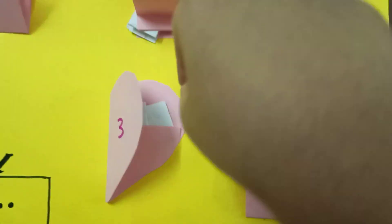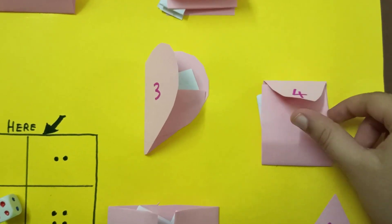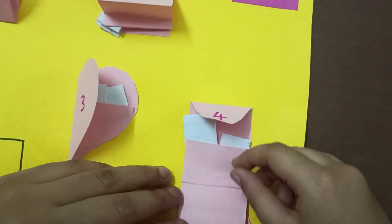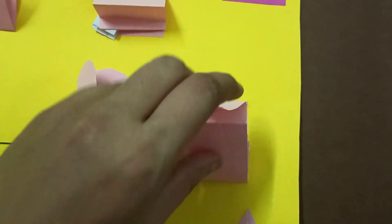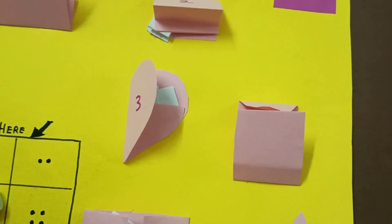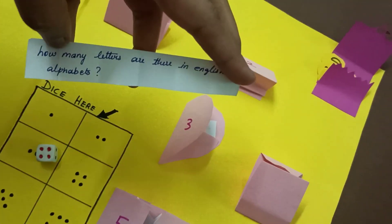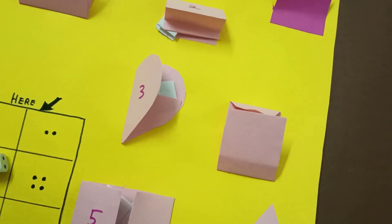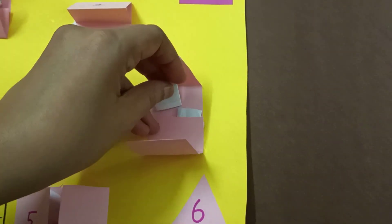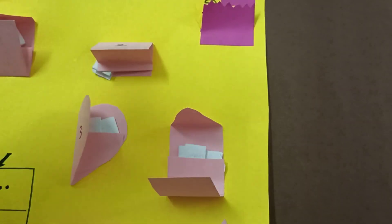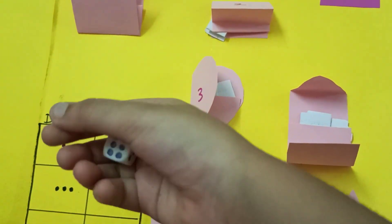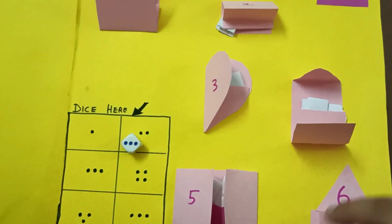Four. Number four. Where is four? Take one paper. Open this. Please read the question. How many letters are there in English alphabets? Twenty-six letters. That's good. Great. If you want, you can keep the same question or replace it with a new question paper. This makes it more fun.